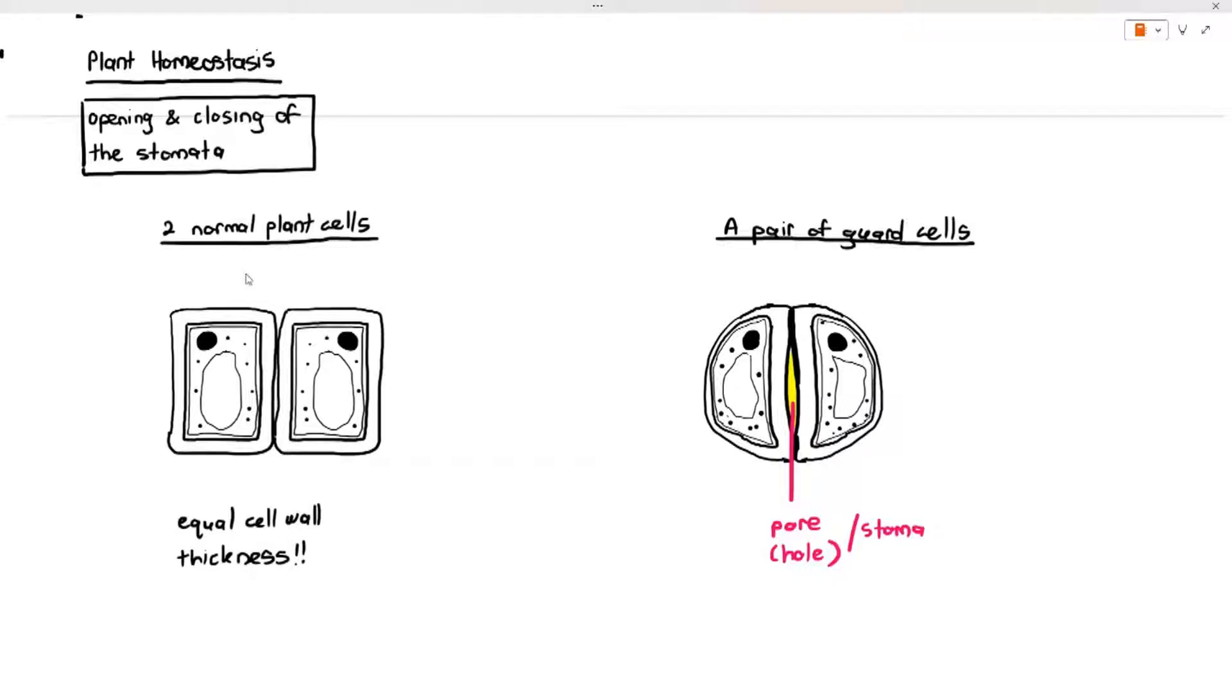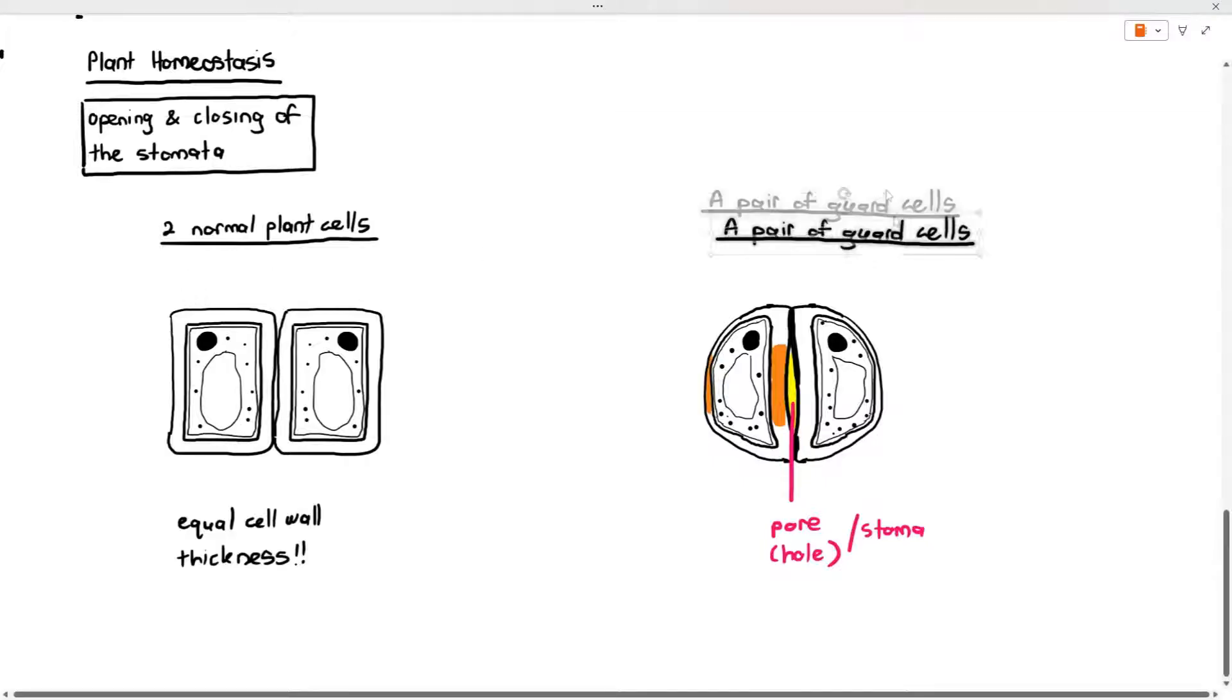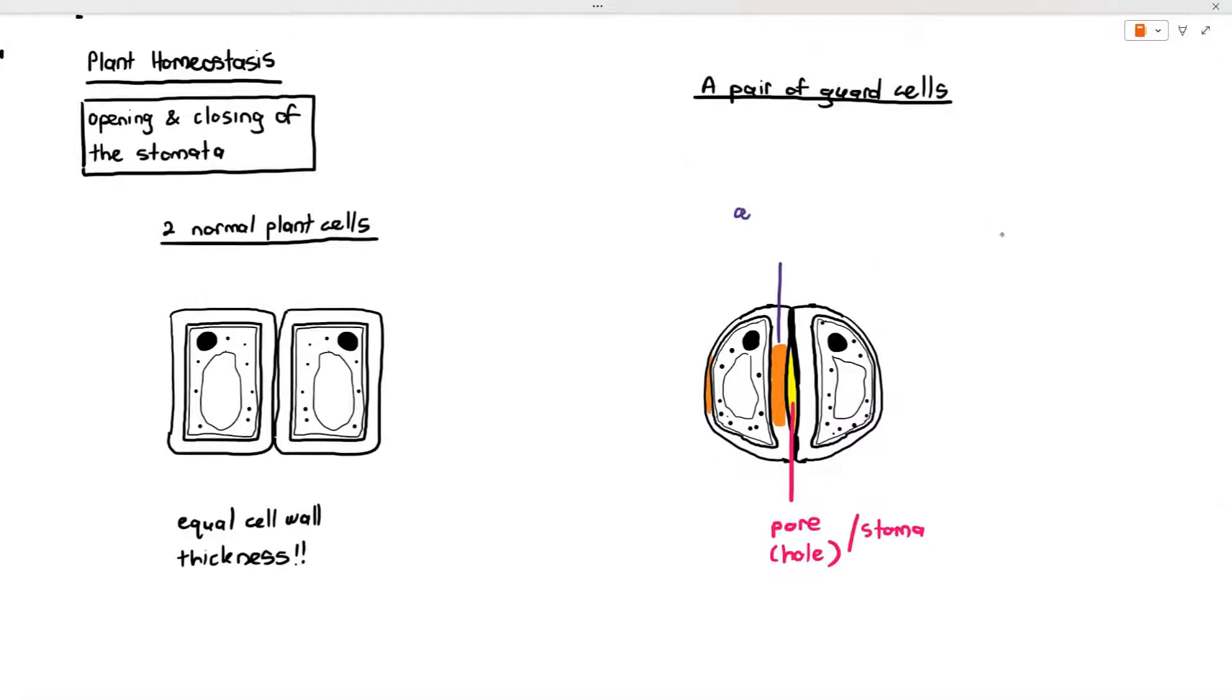Now but here's the thing I want you to notice the thickness of the cell wall in my guard cells. If you notice over here the parts we have highlighted in orange, the cell walls nearer to the pore is thicker and the cell wall further away from the pore is thinner.